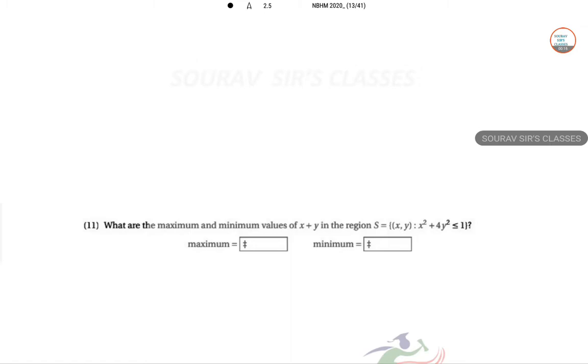We need to find the maximum and minimum of x plus y subject to this constraint. So let f equal x plus y. We can form this as a Lagrangian: f plus lambda times x squared plus 4y squared minus 1.